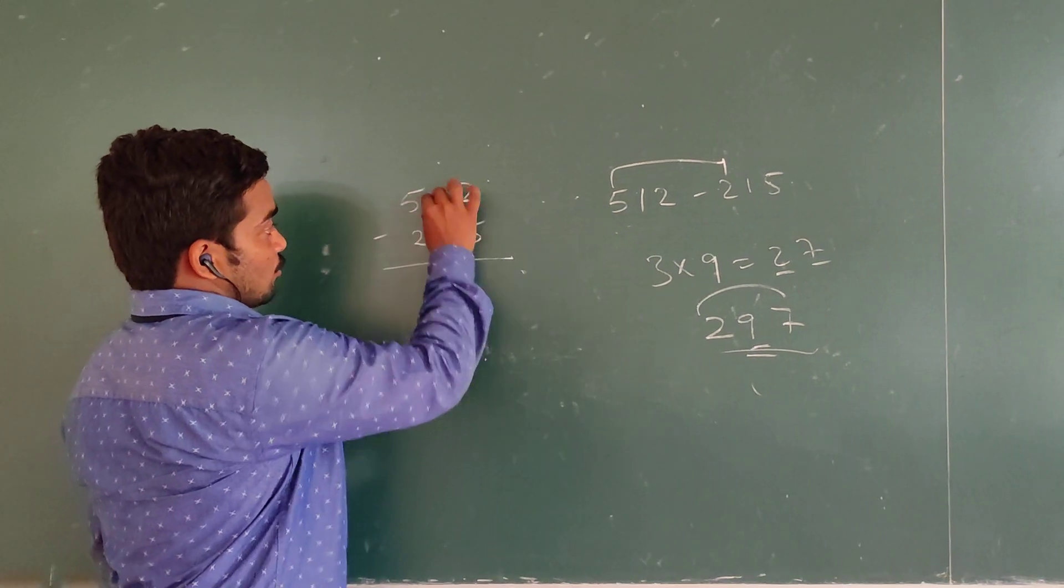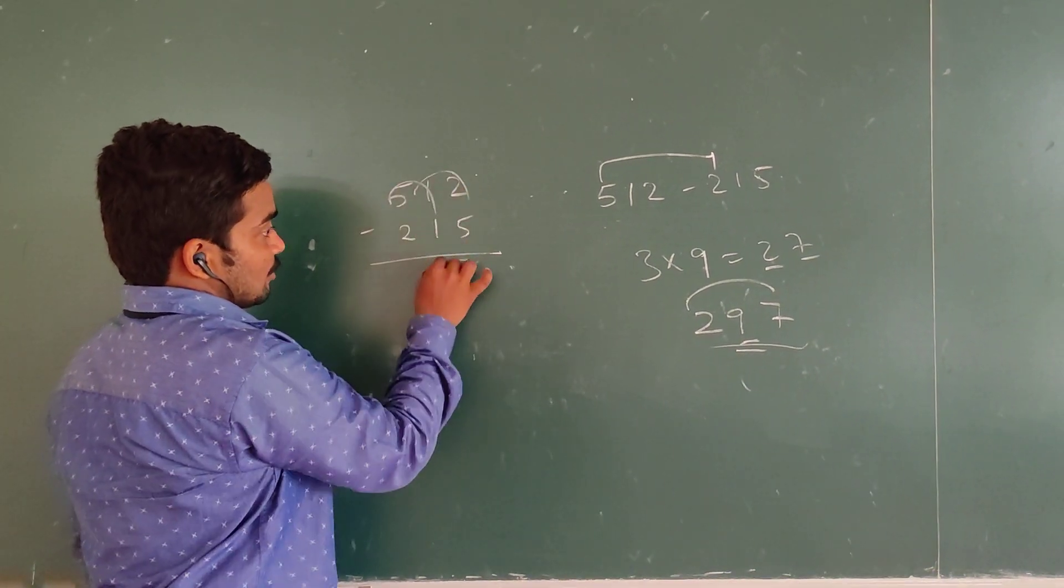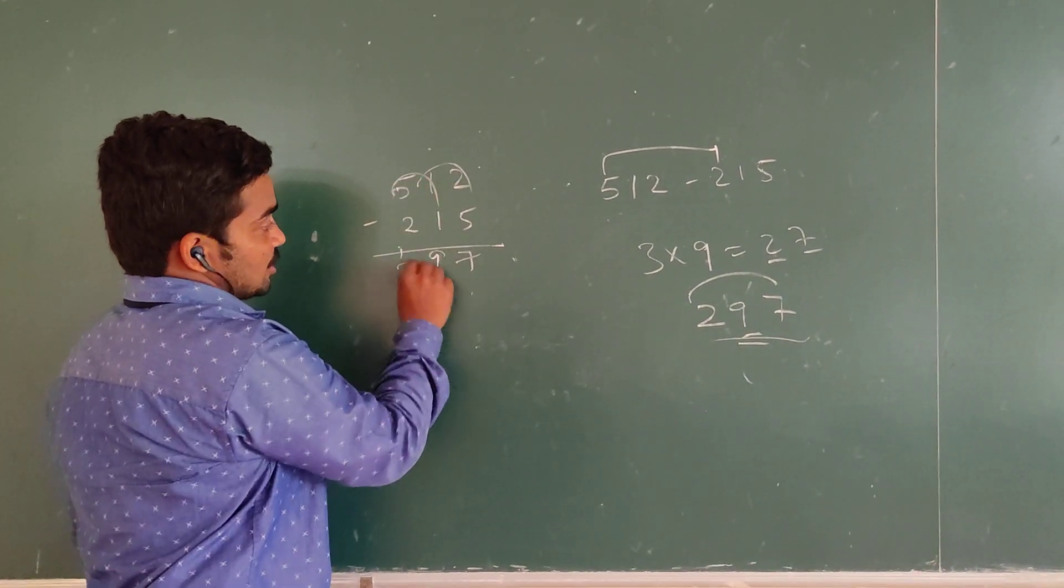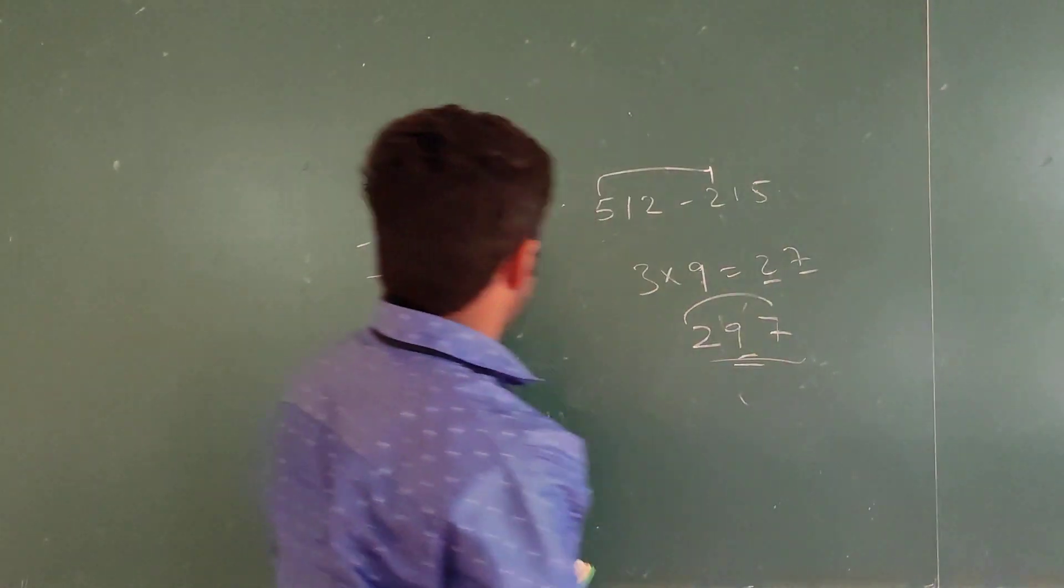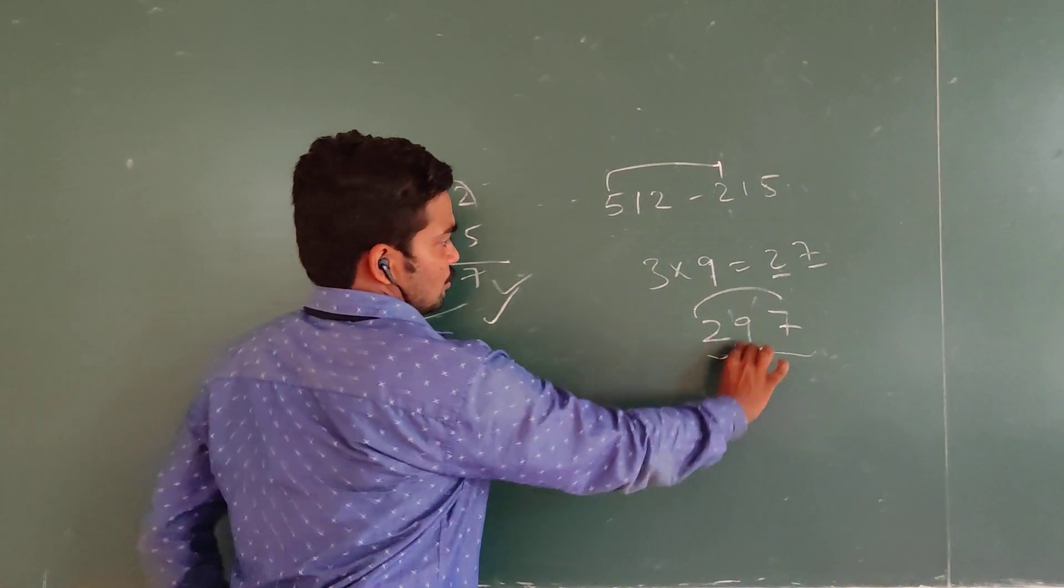Let's verify. 12 minus 5 is 7, 10 minus 1 is 9, and 5 minus 2 is 2. 297 is your answer.